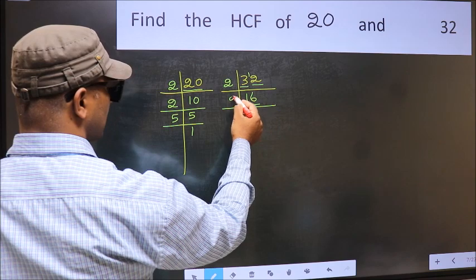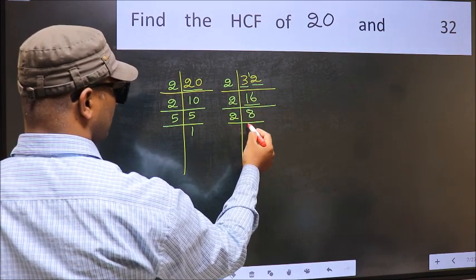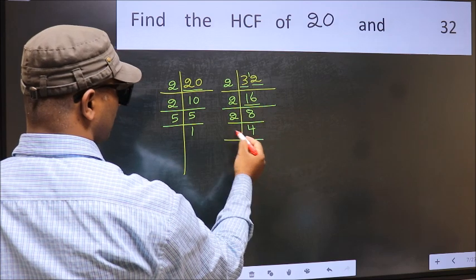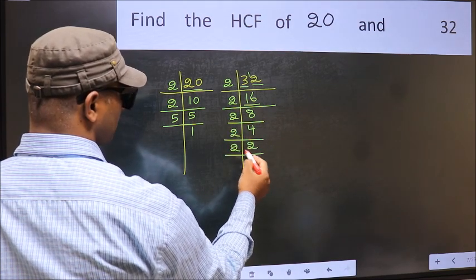Now 16 is 2 times 8. 8 is 2 times 4. 4 is 2 times 2. 2 is a prime number, so 2 times 1 is 2.